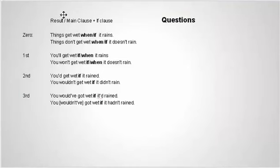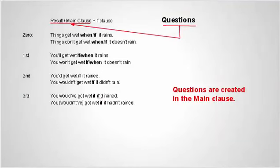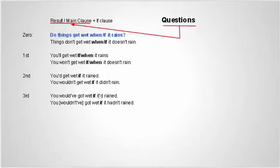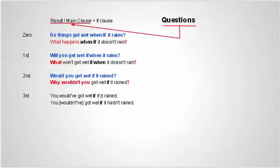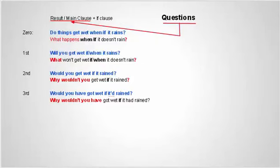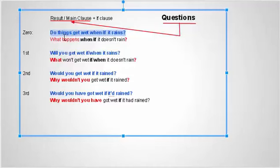When we make questions, we need to use the main clause. Questions are created with the main clause. 'Do things get wet if it rains?' — that's a yes-no question. We have yes-no questions and we have wh-questions. 'What happens when it doesn't rain?' — that's a wh-question. The yes-no questions usually have the same subject. So simple present uses 'do', and future will uses 'will'.